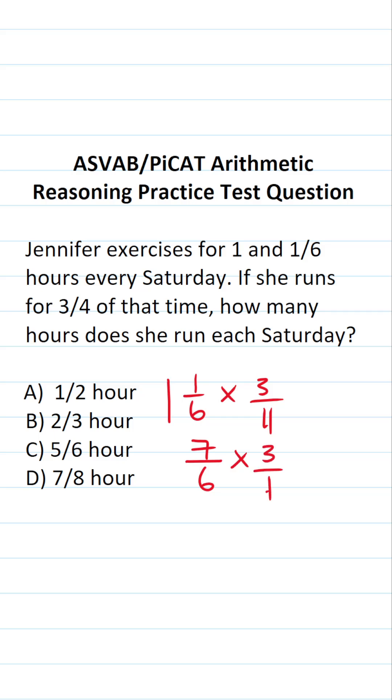All right, so now that we've rewritten that, we can do this math pretty quickly. When you multiply fractions, you just multiply straight across. Seven times three is twenty-one. Six times four is twenty-four.